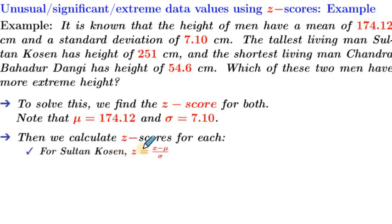We have the formula for z, which is x minus mu over sigma. So our x is 251, our mean is 174.12, and our standard deviation is 7.10. This is equal to 76.88 over 7.10, which equals 10.83.